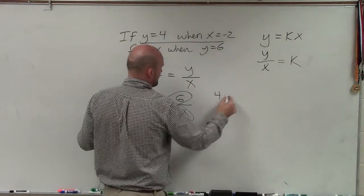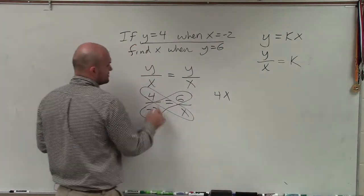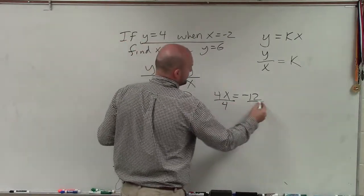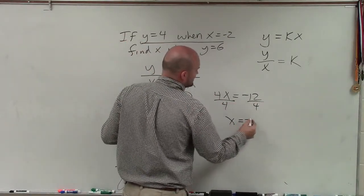So I do 4 times x, which is 4x, is equal to negative 2 times 6, which is equal to negative 12. Now, to solve for x, I divide by 4, divide by 4. x is equal to negative 3.